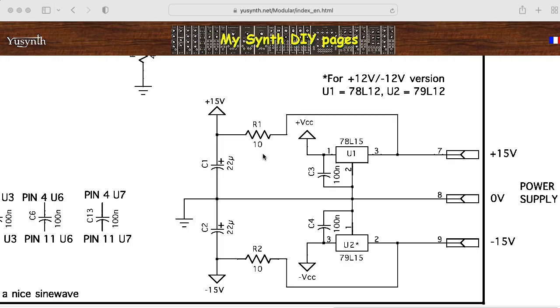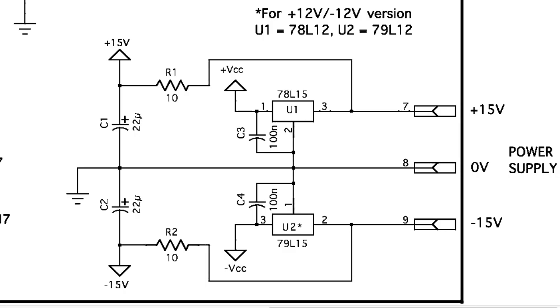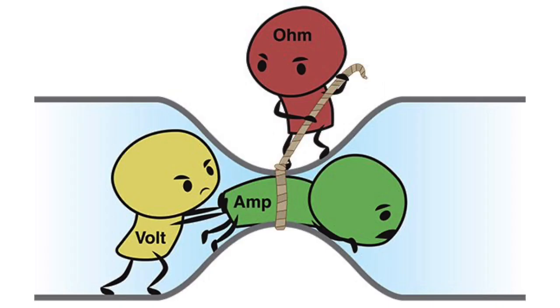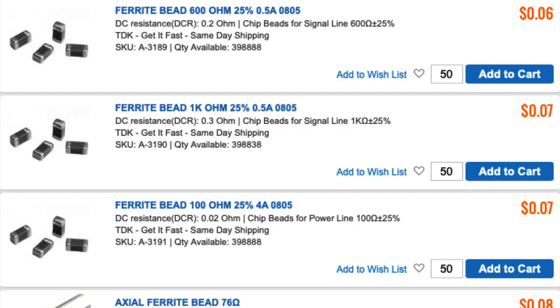Instead of a ferrite bead, sometimes people will put something like a 10-ohm resistor in this spot, like in this U-Synth design. You'll also see people use 22 ohms. There will, of course, be a voltage drop across that resistor that depends on the current draw. So if you're using your voltage rails as references for something, you may need to watch that. With a ferrite bead, you're going to have less resistance at DC and less of a drop.